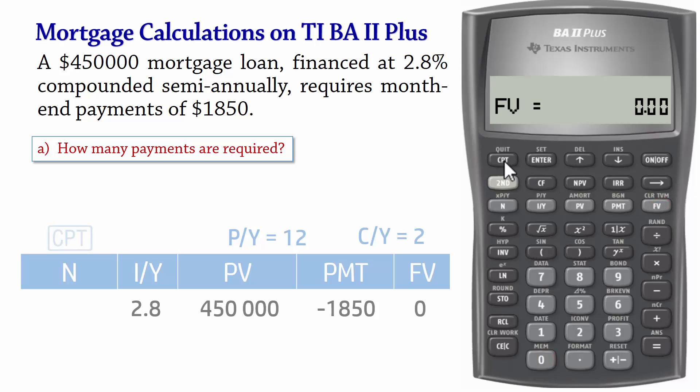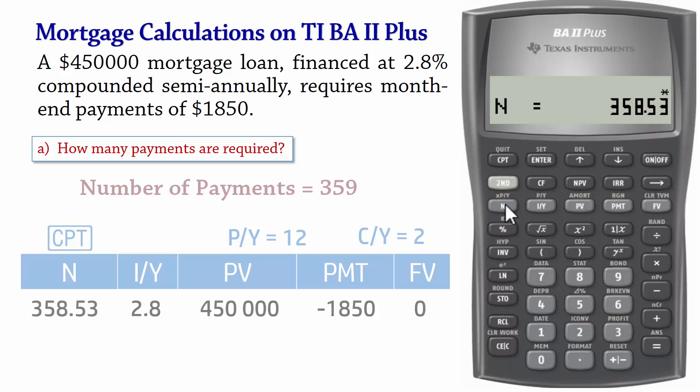And when we compute N, we obtain 358.53. That is, 359 payments are required.